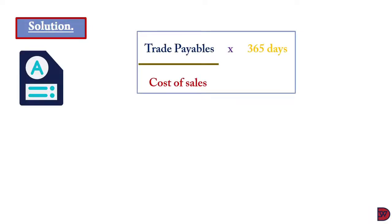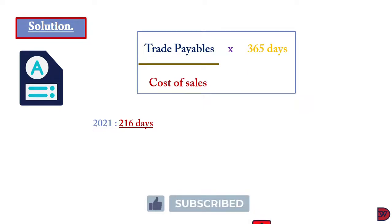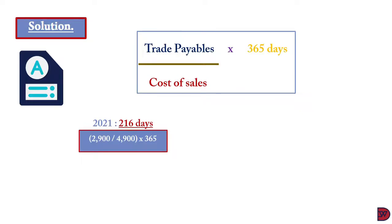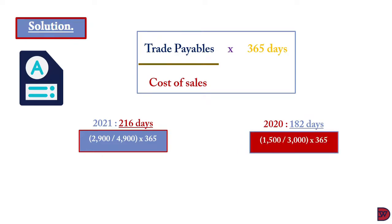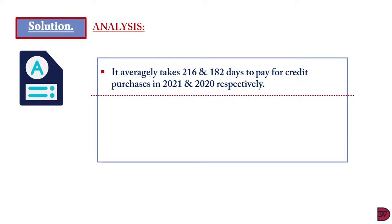Using the formula — trade payables divided by cost of sales multiplied by 365 days — the trade payables payment period for 2021 was 216 days, calculated by dividing trade payables of 2,900 by cost of sales of 4,900, then multiplying by 365. For 2020, it was 182 days, calculated using trade payables of 1,500 divided by cost of sales of 3,000, multiplied by 365.